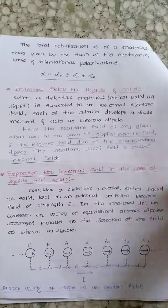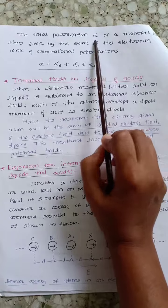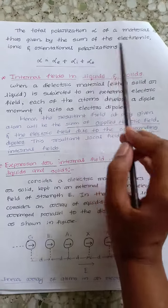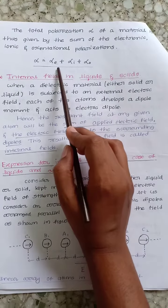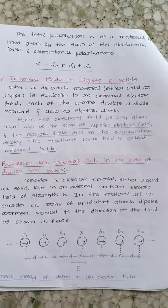What is the total polarization? The total polarization is denoted by alpha, which is given by the sum of electronic polarization, ionic polarization, and orientational polarization.